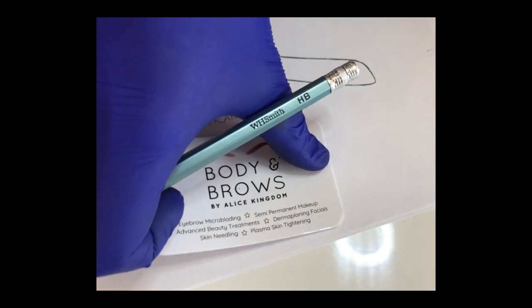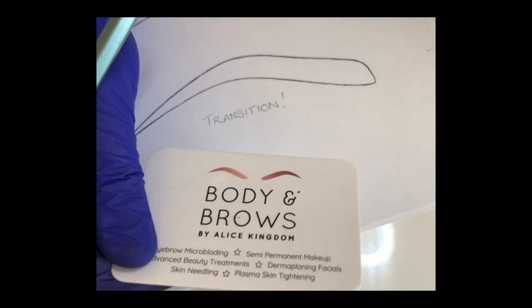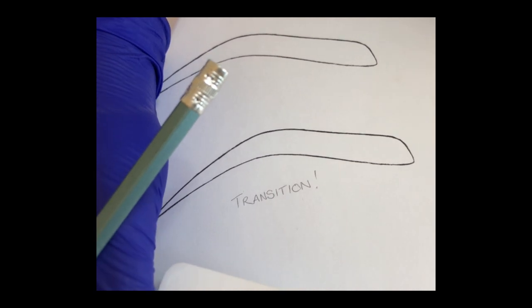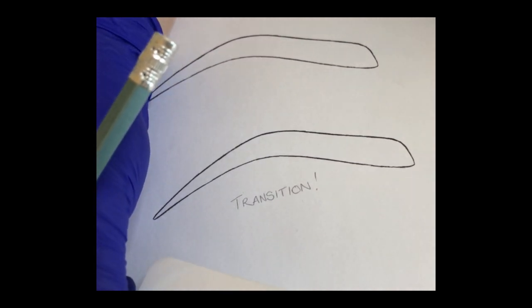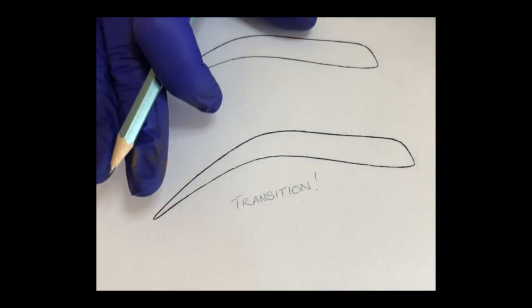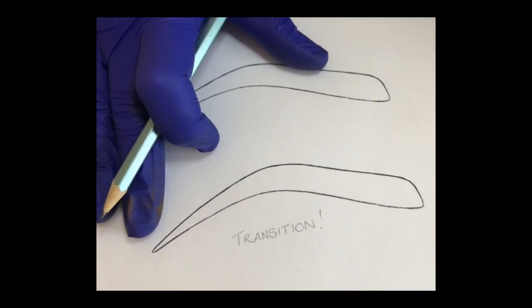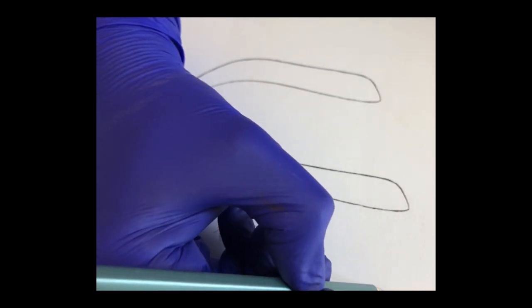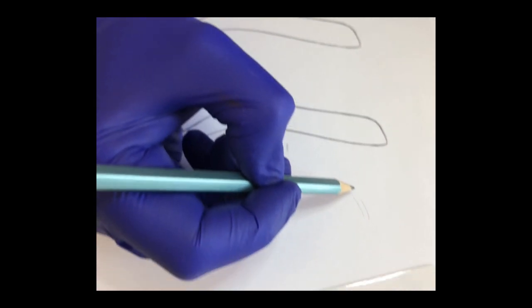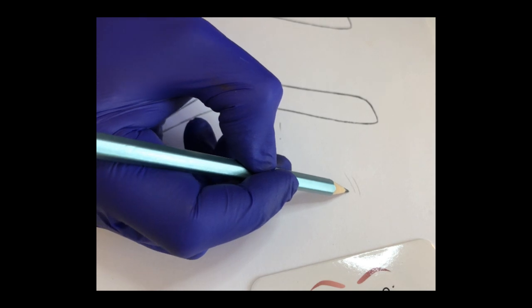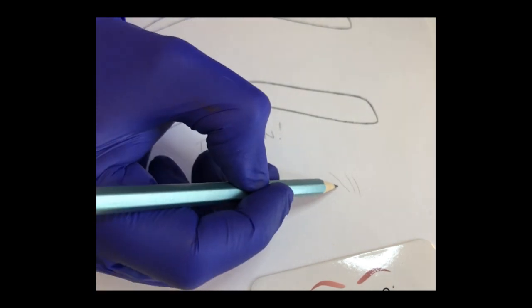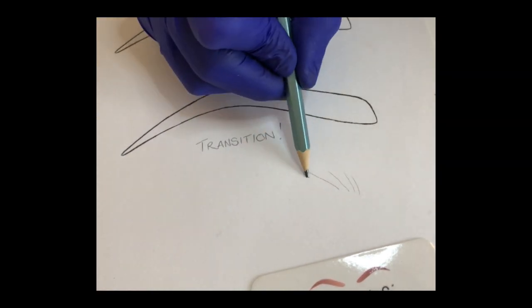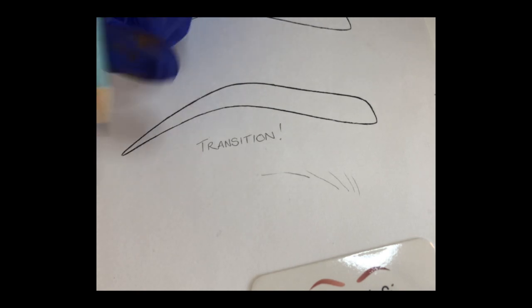Some of us might not know what transition means. Transition is moving from one state or condition to another. In terms of brows, it's the point at which our strokes move from going upwards to curving over and then coming down in the opposite direction.